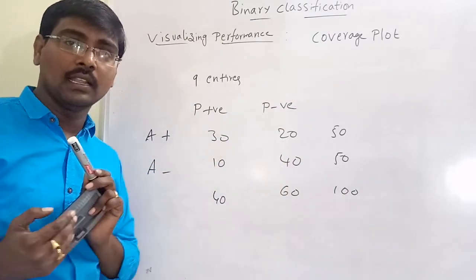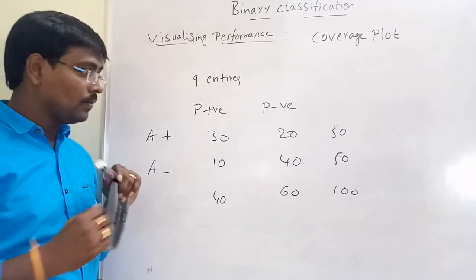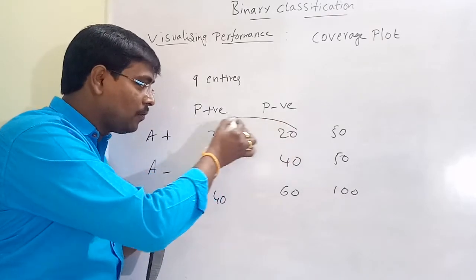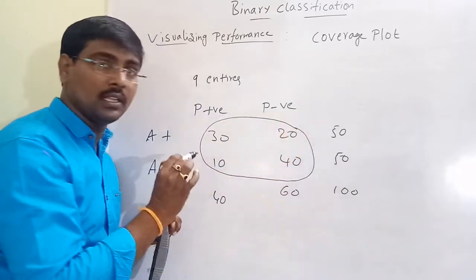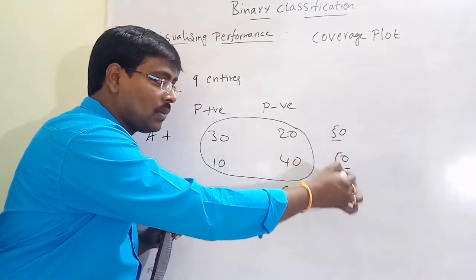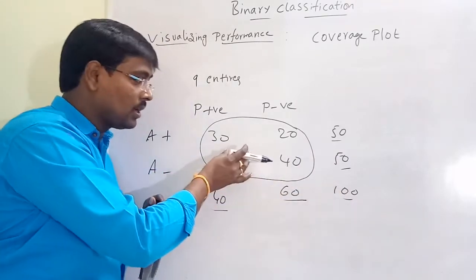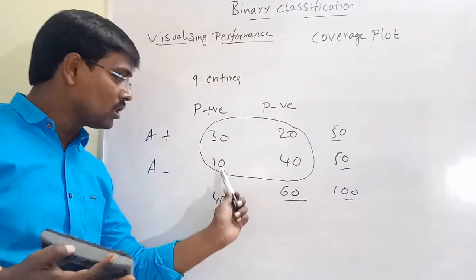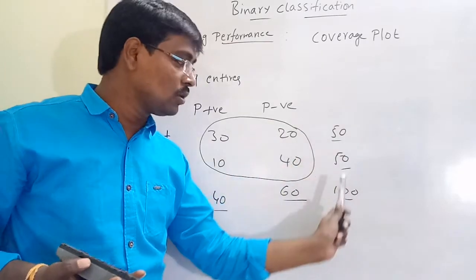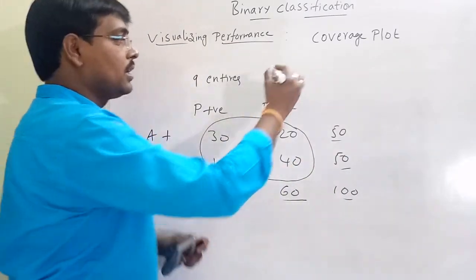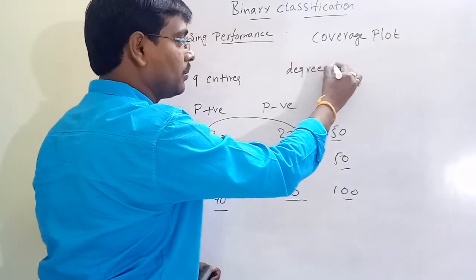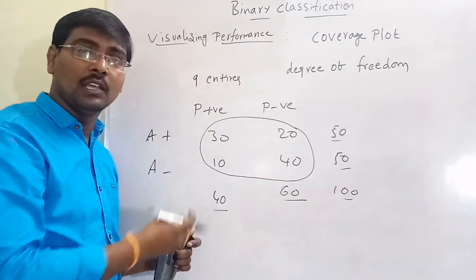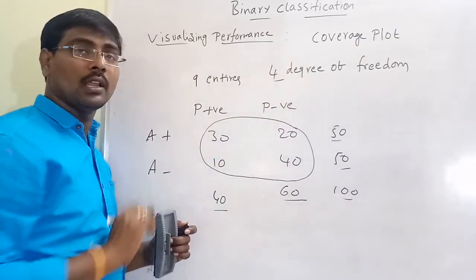From this table we are calculating the accuracy. Out of these 9 entries, if you know any 4 entries, it is easy to calculate the marginals. The marginals are dependent on this. That is, if you know true positives, true negatives, false positives, and false negatives, it is easy to calculate the remaining 4 entries. These 4 entries are called degree of freedom — these 4 are selected freely, without depending on anything, so this is called 4 degrees of freedom.